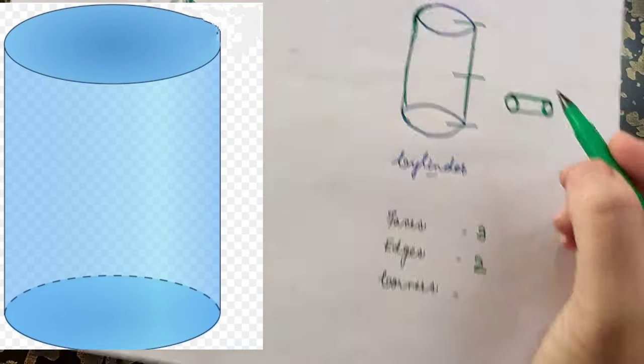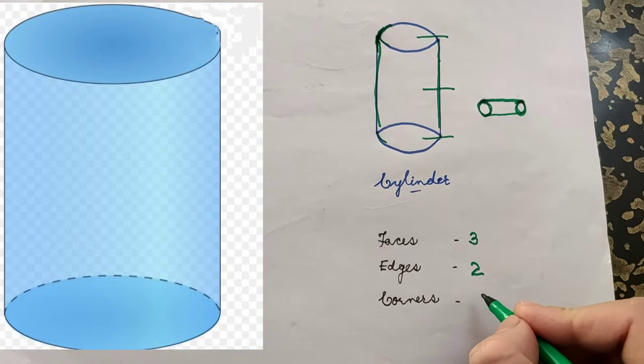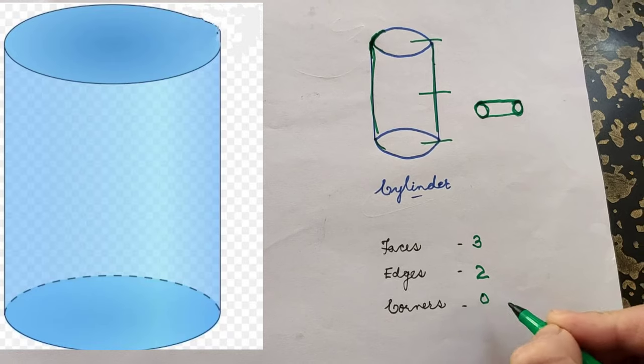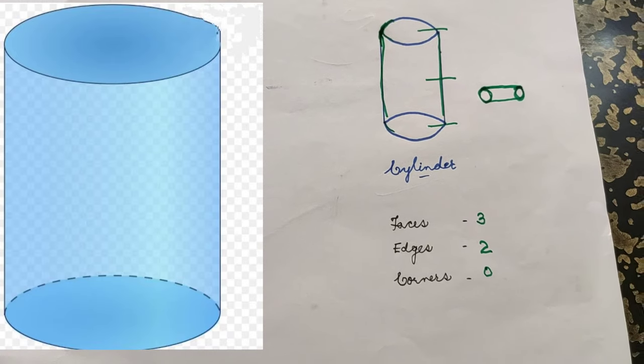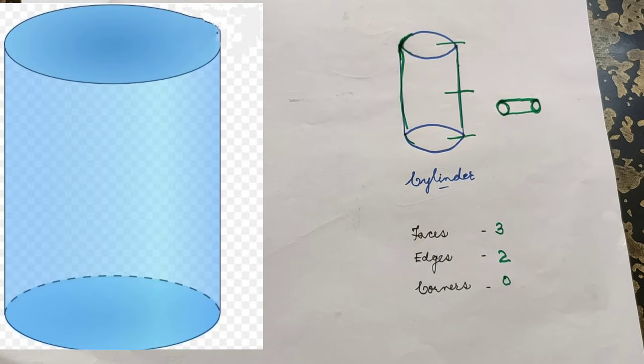How many corners does a cylinder have? Zero corners. That is all about the shapes — their faces, edges, and corners.